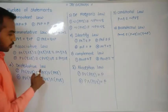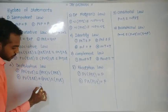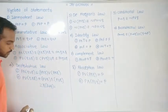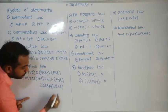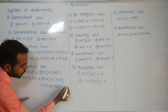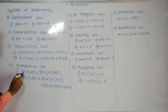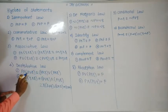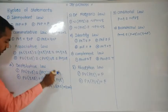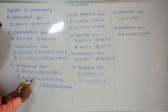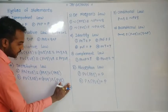Now the distributive law. Before going to the distributive law, recall your third standard: 2 into (3 plus 4) equals 2 into 3 plus 2 into 4. Similarly here, P and (Q or R) equals (P and Q) or (P and R). Also, P or (Q and R) equals (P or Q) and (P or R). This is the distributive law, which is very important.